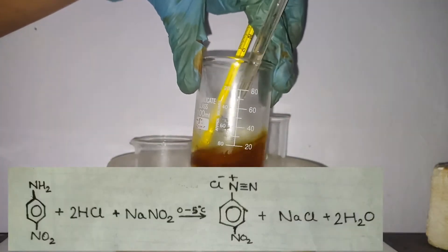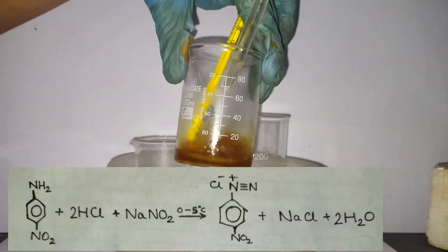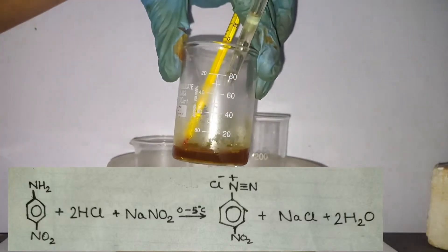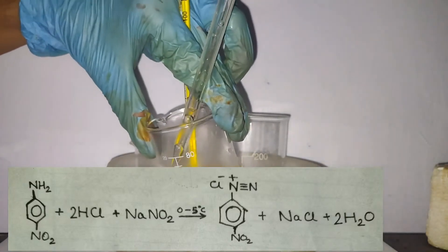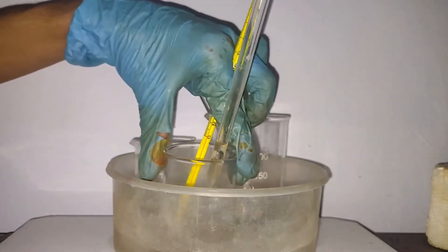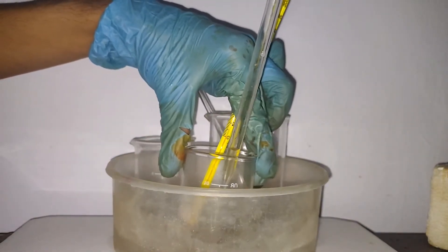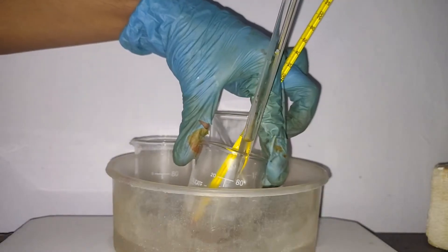What's happening here is para-nitroaniline is reacting with hydrochloric acid and sodium nitrite to form para-nitrobenzene diazonium chloride. This salt is only stable at cold temperatures.